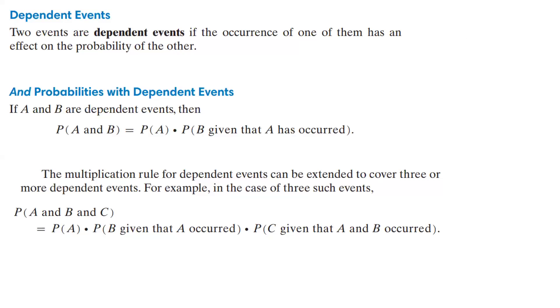All right, so now we're on to dependent events. Two events are dependent if the occurrence of one of them has an effect on the probability of the other.